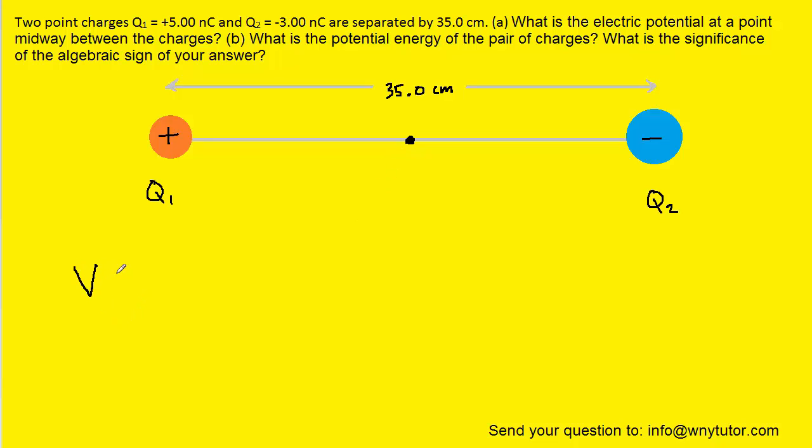And we know that the electric potential produced by point charges is equal to a constant multiplied by the charge divided by a distance. Now, since we have two point charges, we're going to make this calculation two times. And so we can say that the total potential is going to equal the potential produced by charge one plus the potential produced by charge two.